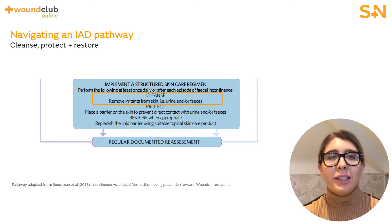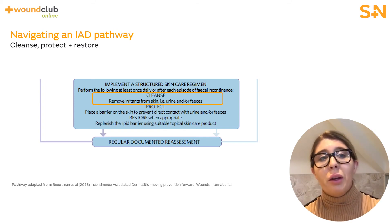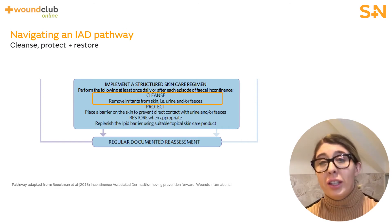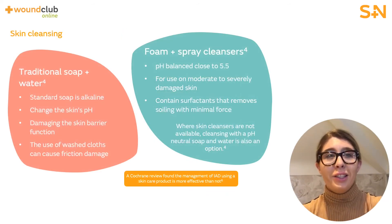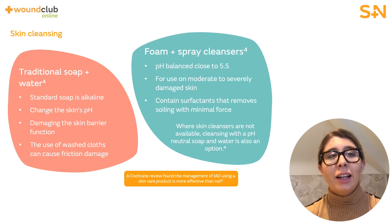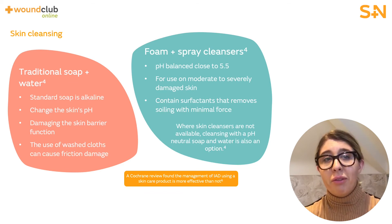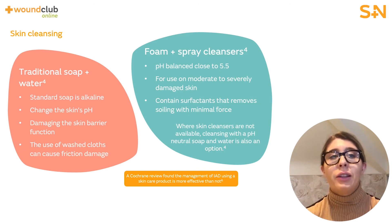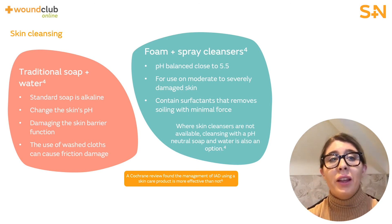The cleanse stage includes cleansing of the skin of any irritants which may be present, including urine and faeces, to avoid further breakdown of the skin. Foam and spray cleansers, or pH-neutral soap, should be used in place of traditional soap and water. Standard soap is alkaline, which can change the skin's pH and open up the skin to damage from other factors such as friction and shear. Foam and spray cleansers in particular contain a surfactant that removes soiling with minimal force, allowing healthcare professionals to avoid aggressive cleaning techniques with washcloths, which can further abrade the skin.